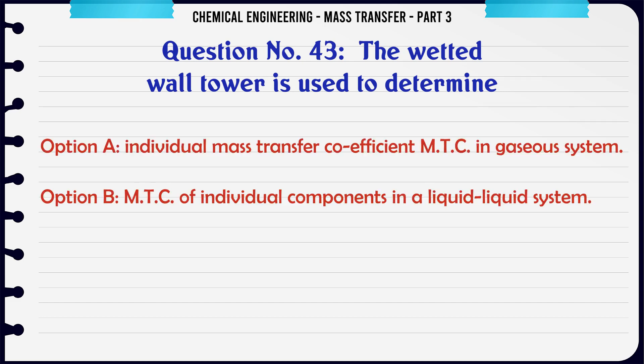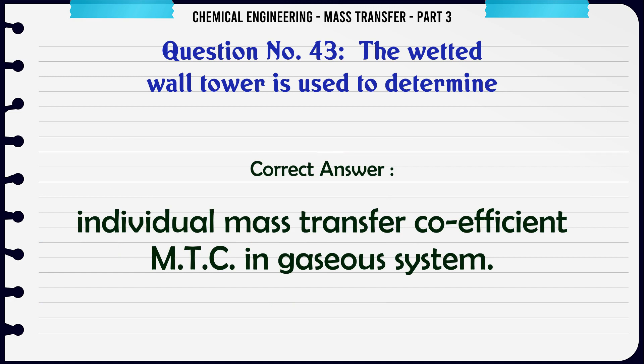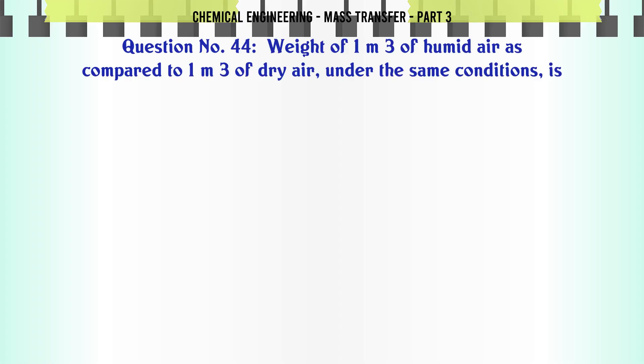The wetted wall tower is used to determine: A) individual mass transfer coefficient (MTC) in a gaseous system, B) MTC of individual components in a liquid-liquid system, C) MTC of liquid in a liquid-gas system, D) the overall MTC of the system. The correct answer is: individual mass transfer coefficient in a gaseous system.